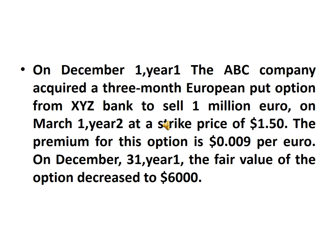On December 1st, year 1, the APC company acquired a 3-month European put option from XYZ Bank to sell 1 million euro on March 1st, year 2, at a strike price of $1.50. The premium for this option is $0.009 per euro. On December 31st, year 1, the fair value of the option decreased to $6,000.